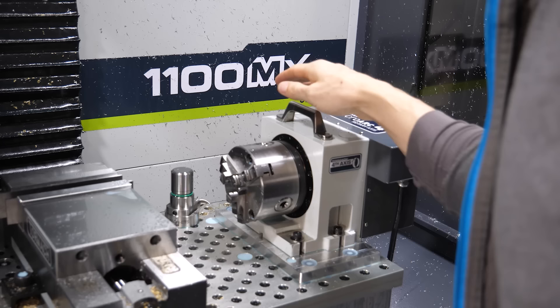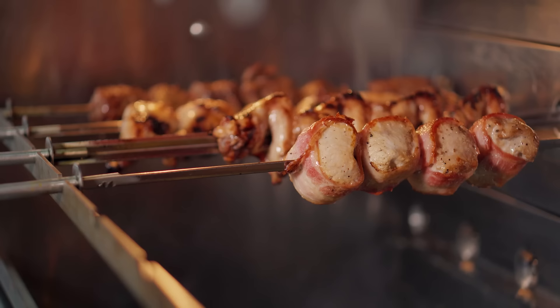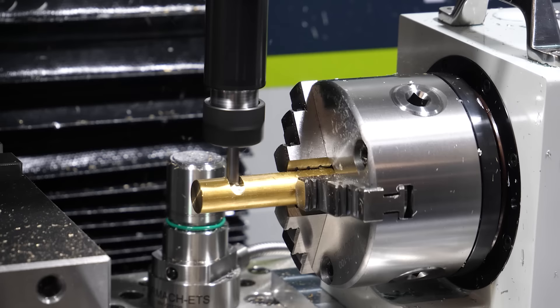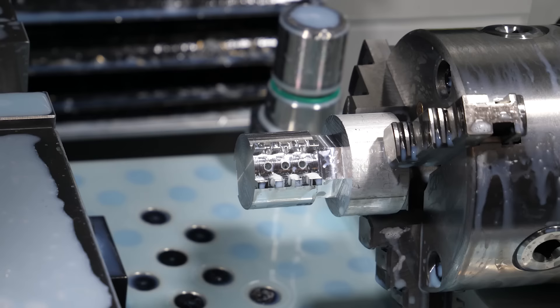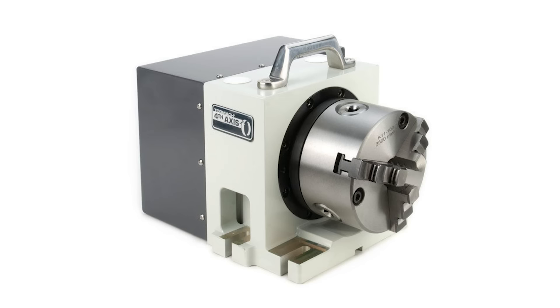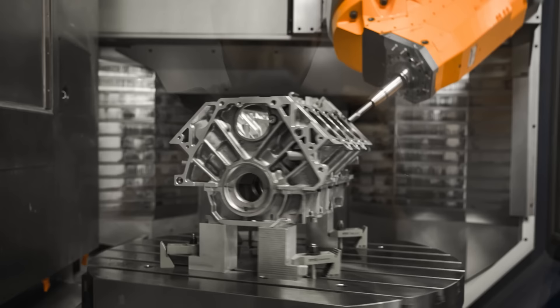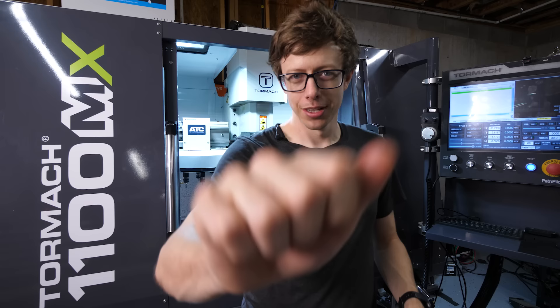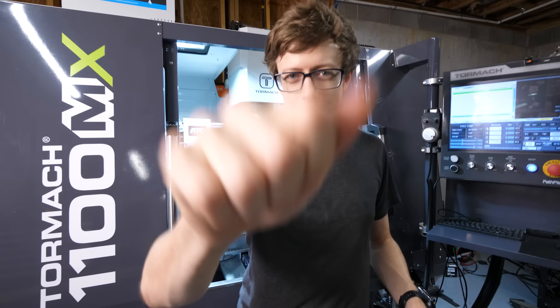It also has this rotating axis that really reminds me of cooking something on a spit. It'll spin your part as it cuts, and it'll allow you to do all kinds of fancy things. You can get machines that have a rotary axis like this, stacked on top of another rotary axis. It sounds kind of crazy, but you can do some incredible things with that setup. I don't know if you're out there, Haas, but if you can hear me, I'd love to talk about a UMC 500.